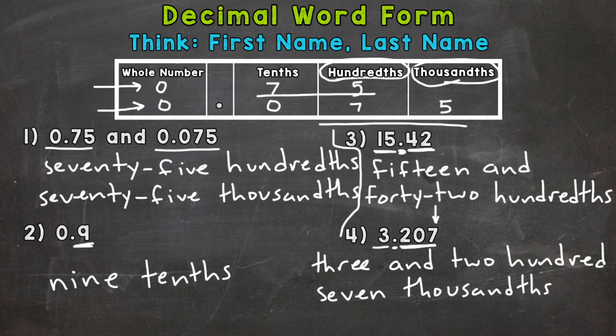So there you have it. There's how you write decimals in word form. Remember, first name, last name. Read the number as is that comes after the decimal. That's the first name. And the last name is going to be wherever that decimal ends.